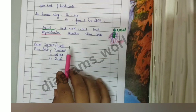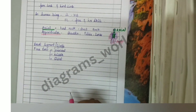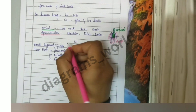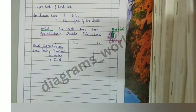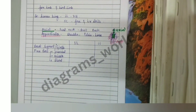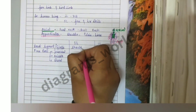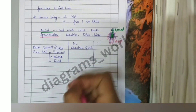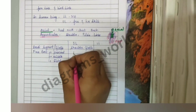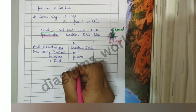So every limb has a girdle and a free part; the free part is again divided into proximal, middle, and distal. Notice how upper limb and lower limb are made on the same basic pattern. In the upper limb we have the shoulder girdle, the proximal part is the arm, the middle part is the forearm, and the distal part is the hand.